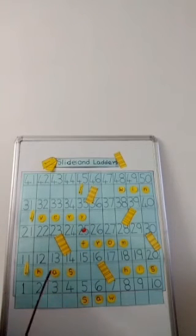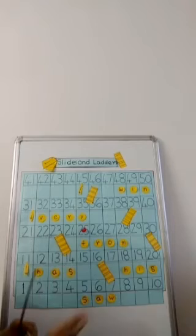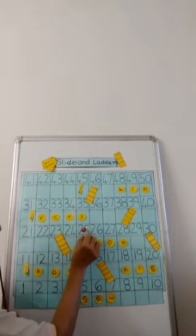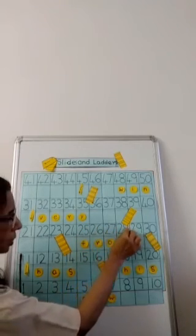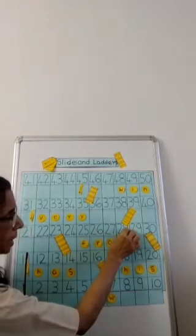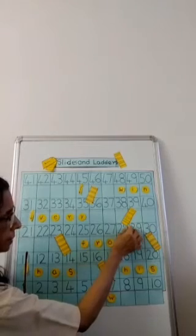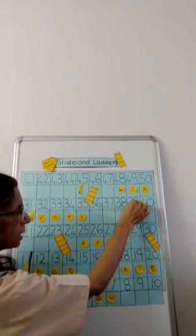But here the word is not getting completed. Again I got 3. 1, 2, 3. I reached 28 and then I climbed the ladder to 39.